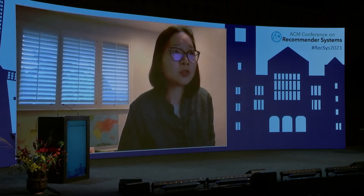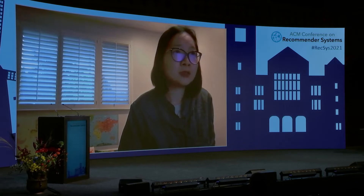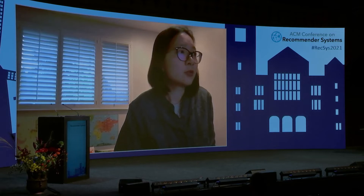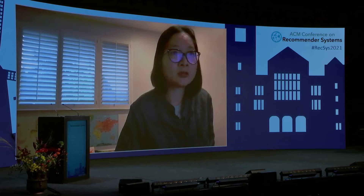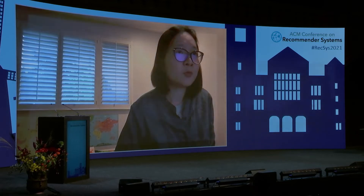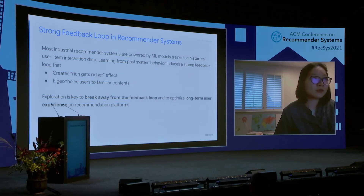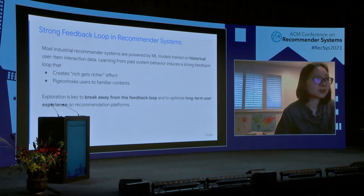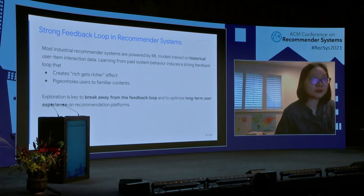While exploration-exploitation trade-off is well studied in reinforcement learning and bandit literature, the role it plays in recommender systems is actually not very clear. Most industrial recommenders are powered by ML models trained on large amounts of user-item interaction pairs. This usually induces a very strong feedback loop that creates the rich-gets-richer effect, meaning head content gets more and more exposure while tail and fresh content are hard to discover. It also has a tendency to pigeonhole users to content they are already familiar with.